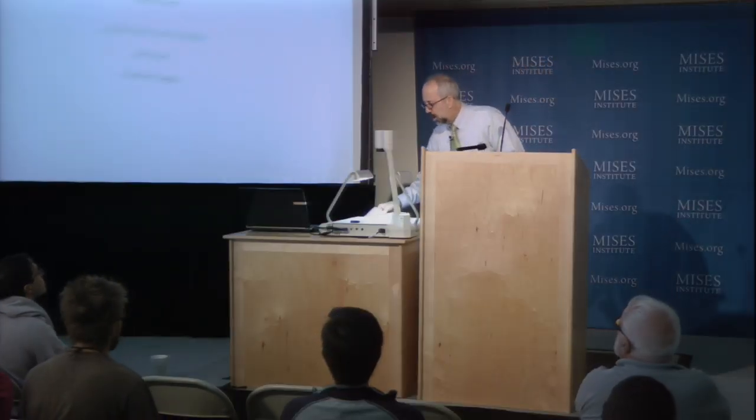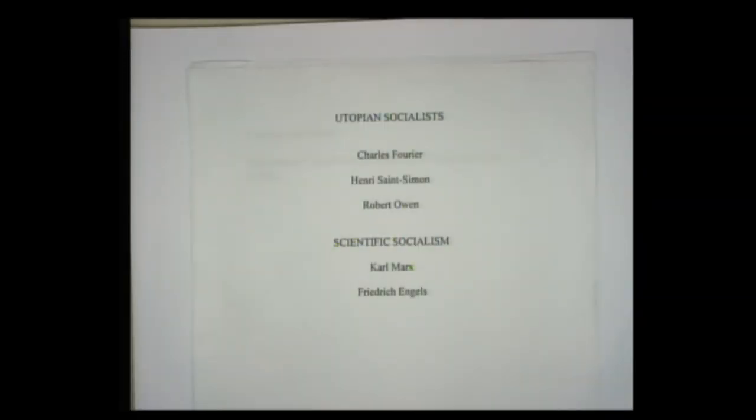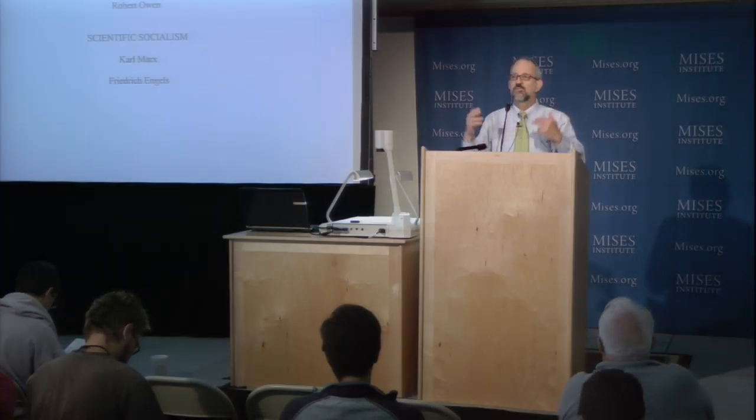Let's start at the beginning. Initially there were a group of socialists in the early 19th century who predated Karl Marx, known as the Utopian socialists. Their names include Charles Fourier — French — Henri Saint-Simon, also French, and Robert Owen, a Scottish industrialist. Each came up with their own view of the ideal society. Fourier was particularly crazy. He actually wrote that under socialism, roasted chickens would fly through the air into men's mouths.